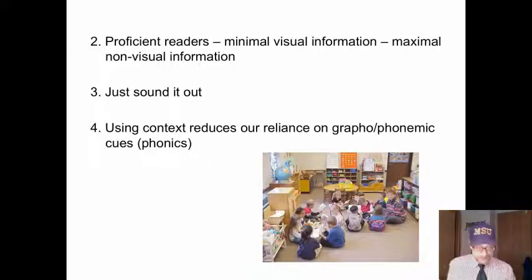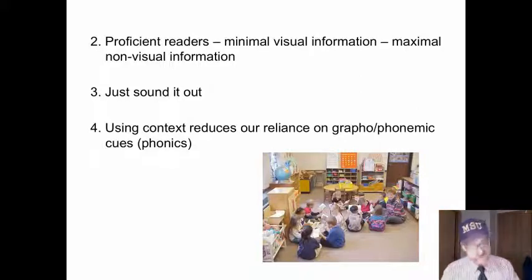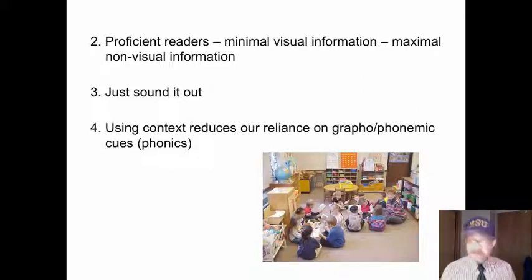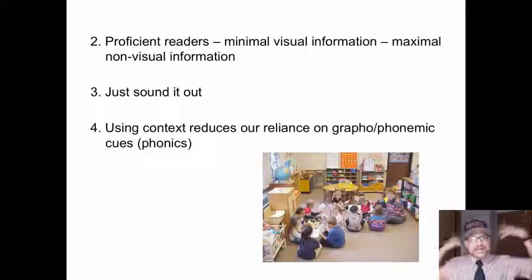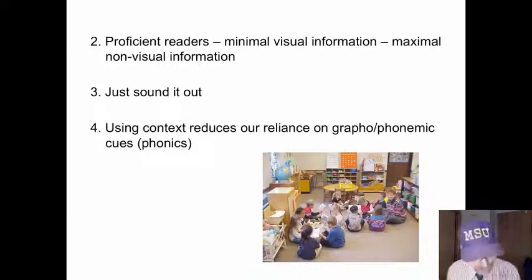Visual perception, therefore, is more a function of the brain than the eye. For example, my lovely wife notices when something is out of place. Now, her eyes are probably worse than mine, but what is in the brain helps her to perceive certain things that I do not even perceive.